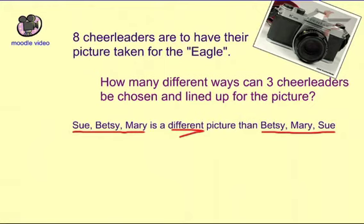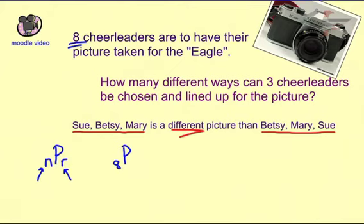Because the order matters, we're going to use the permutation formula NPR. N is how many we are picking from, and we have eight cheerleaders. The R value is how many we are picking for our example — we want three cheerleaders in the picture. So we have eight, and we're going to pick three of them.